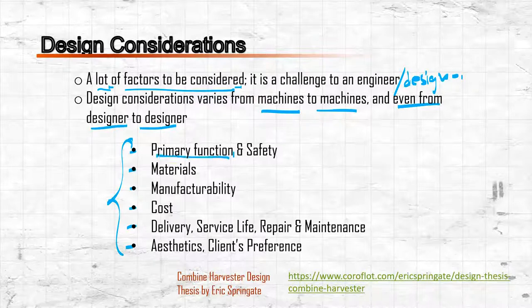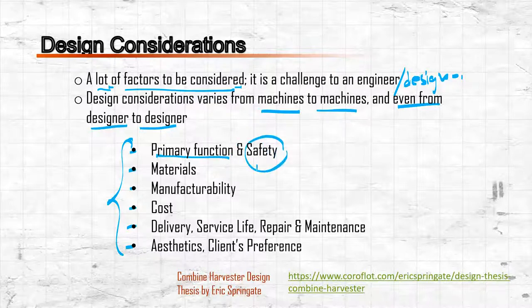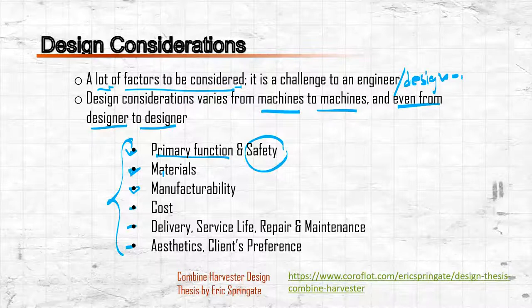The first consideration is primary function. If you want to design a combined harvester, you must be able to fulfill the function — that is the main consideration. Safety also comes into play, and there is also the consideration about materials and manufacturability. What's the use if the materials are available but the specific manufacturing operation is not?